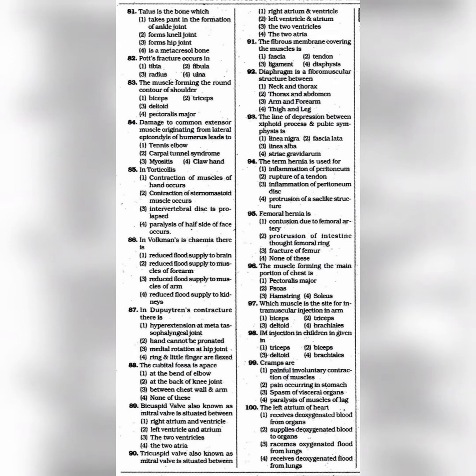Question 90: Tricuspid valve, also known as the right atrioventricular valve, is situated — the answer is option 2: Between right ventricle and right atrium. Question 91: The fibrous membrane covering the muscle is — the answer is option 1: Fascia. Question 92: Diaphragm is a fibromuscular structure between — the answer is option 2: Thorax and abdomen.